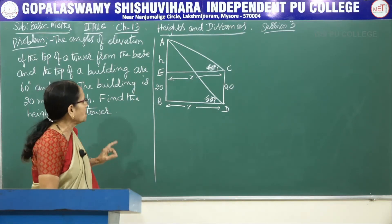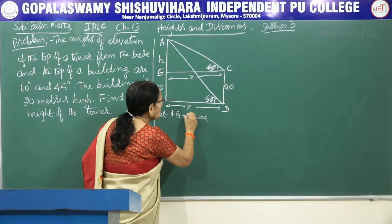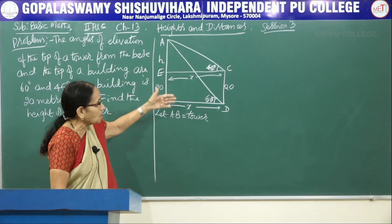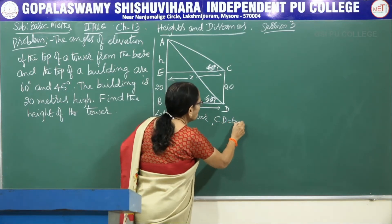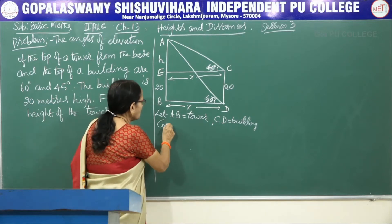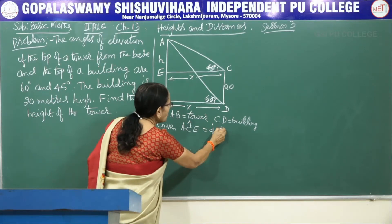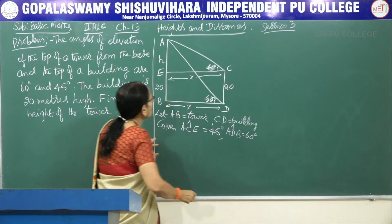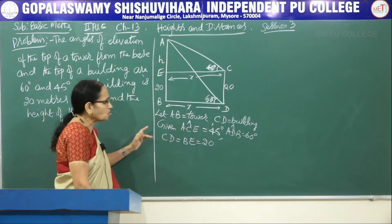Now let me explain. Let AB be the tower, CD be the building. Given: angle ACE is equal to 45 degrees, angle ADB is given to be 60 degrees, and CD which equals BE is also equal to 20. So these are the data we are having.